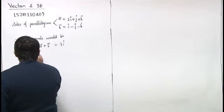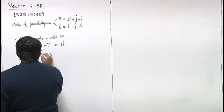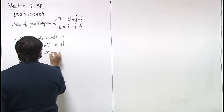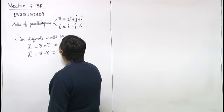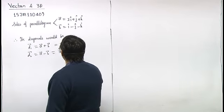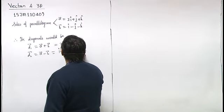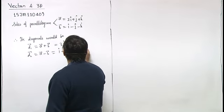The other diagonal will be a minus b, which is i cap plus two j cap plus two k cap. Right?